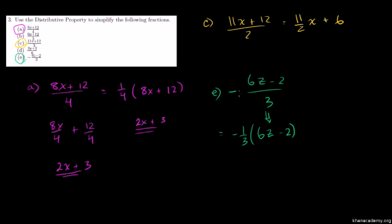Next problem: negative 1 over 3 times 6z minus 2. So negative 1 third times 6z minus 2. This becomes negative 2z. So negative 1 third times negative 2 equals negative 2z. We simplify by dividing by 3.